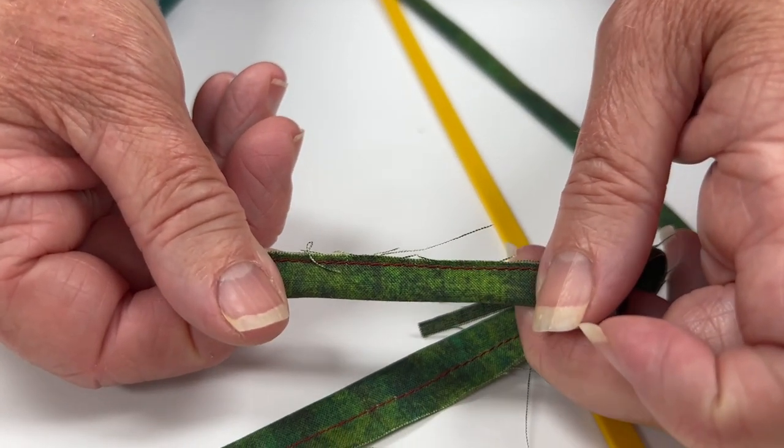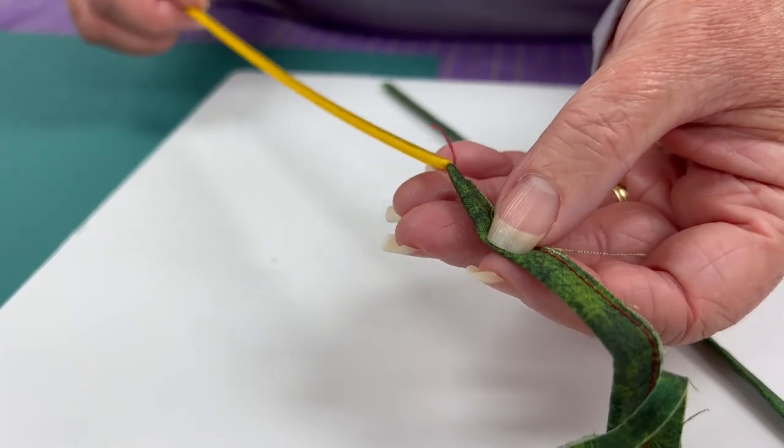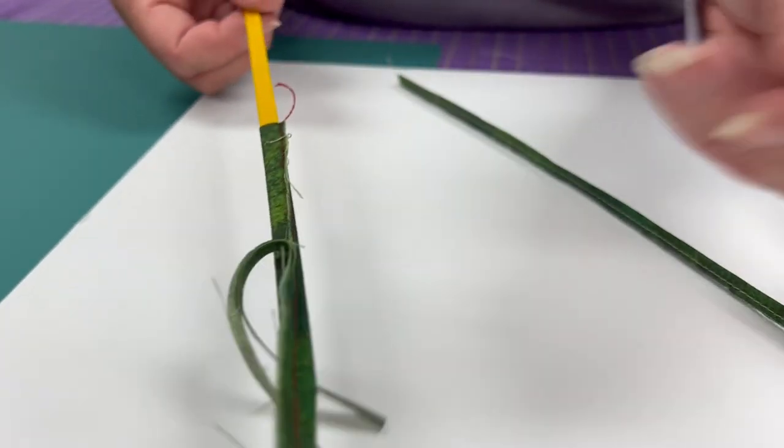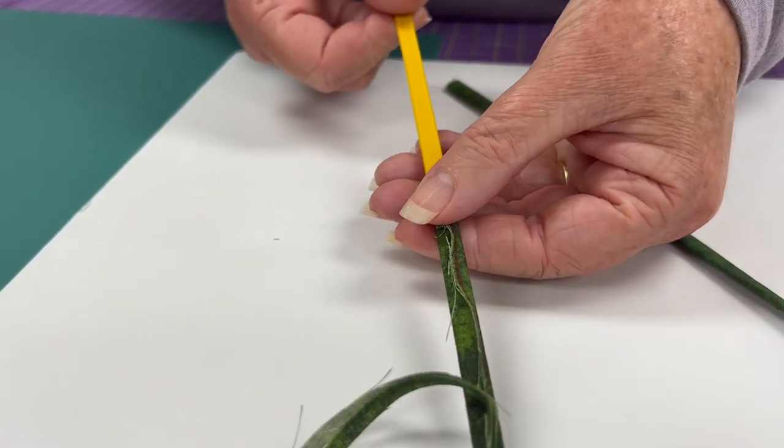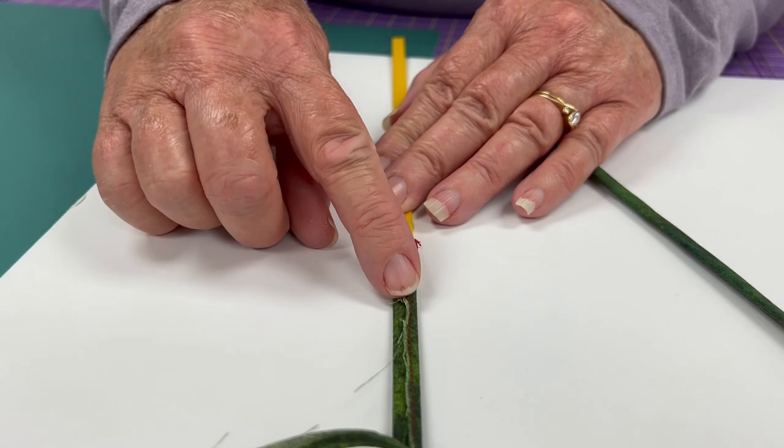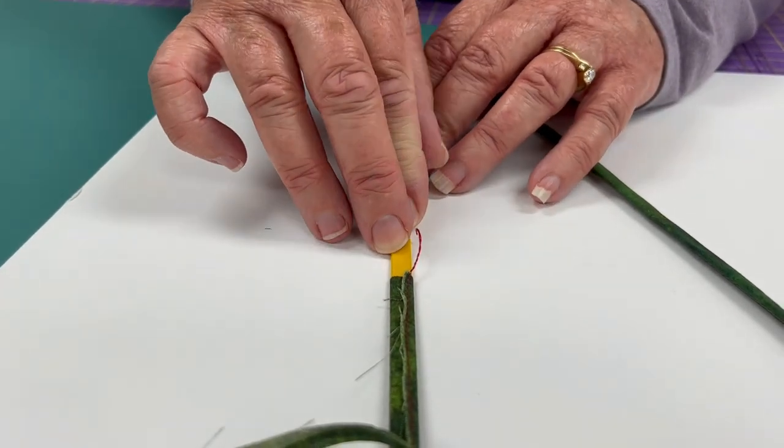So I've trimmed this portion of it. Then you're ready to insert your bias bar, you will go ahead and tuck that in. And then you can easily roll that seam to the back side of your stem and press it. And you can press right on top of this material.